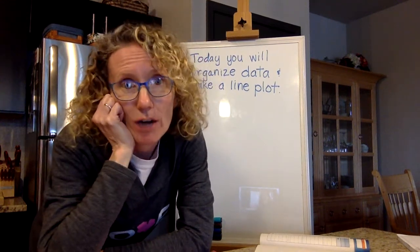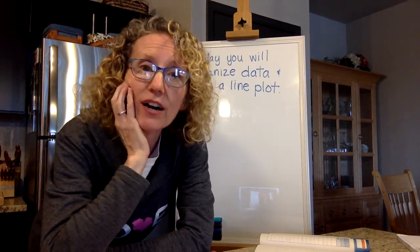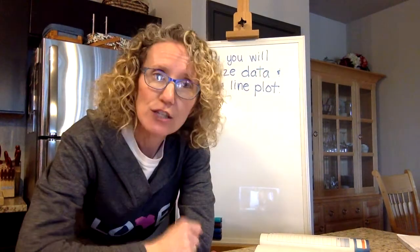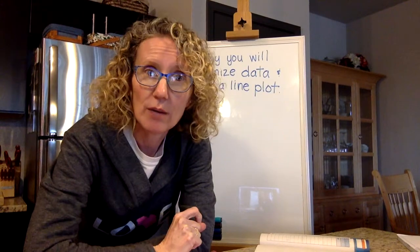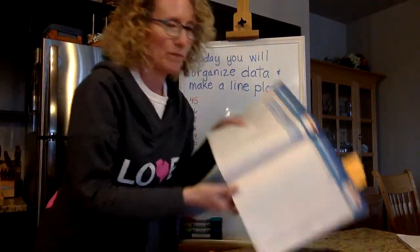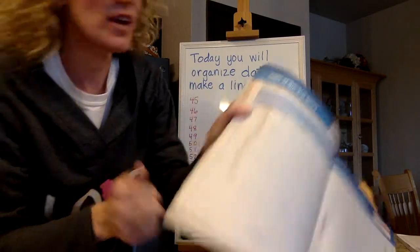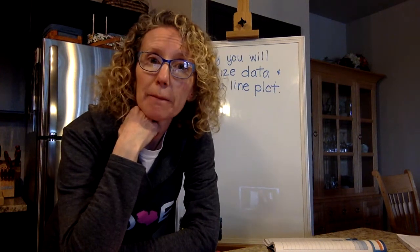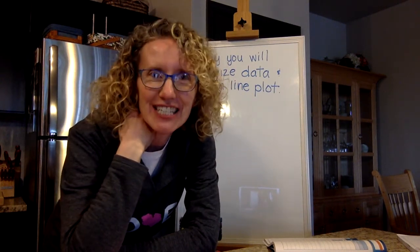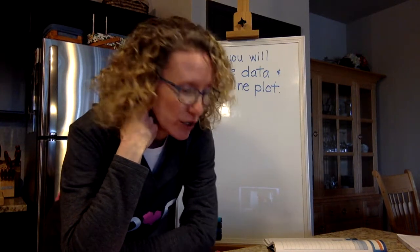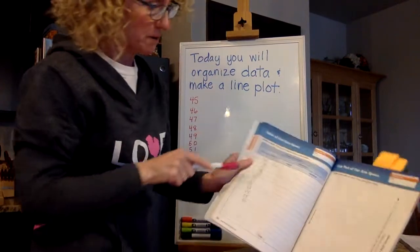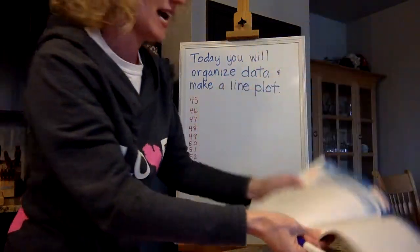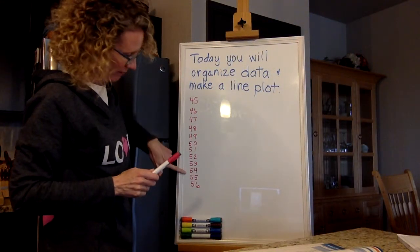So in the arm span, look really carefully. Find the smallest arm span. The smallest arm span on our list belongs to Violet and I have it as 45. And so that's going to be our lowest number, our first number that we start with. And so you can write 45 right there. Now look through that same list. Find the biggest number. The longest arm span belongs to Diana and hers is 56 inches. So then what you're going to do is write every number on here from 45 to 56. And that's what I did right here.